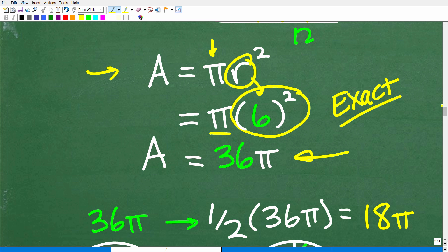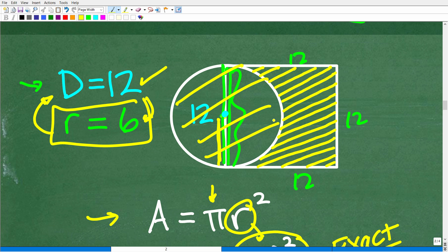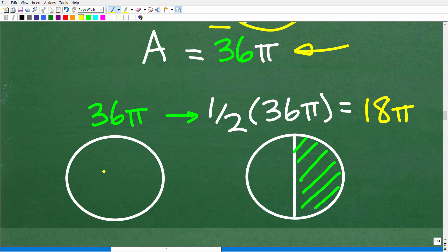But we are not done. So all we've done so far is find the area of the entire circle. Remember, that's not part of our strategy. What we need to do is find the semicircle. So we can't find the semicircle until we find the entire circle. So our entire area for our entire circle is 36π. So we're just going to take that and divide it by 2. So one half times 36π is 18π. And this now is the area, the exact area of the semicircle.